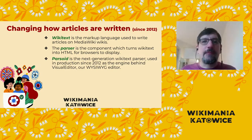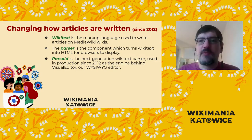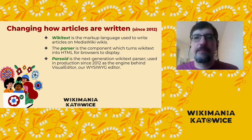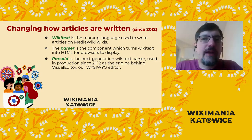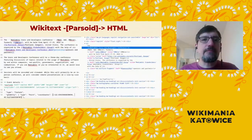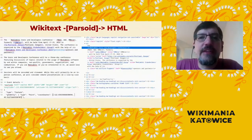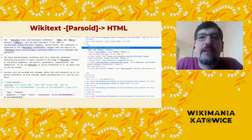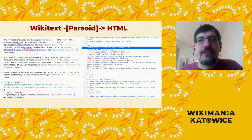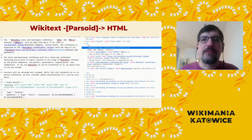The original driver for Parsoid's creation was Visual Editor, which was a new way at the time to edit MediaWiki articles visually. The text on the left is what an editor sees when they're writing an article directly in Wikitext, and the parser — Parsoid in this case — generates the HTML on the right, which is given to the browser.